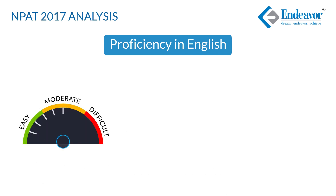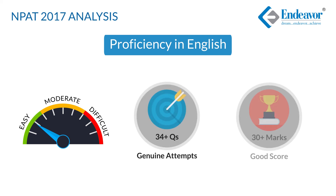Looking at the level of difficulty, it was very much possible to attempt almost 40 out of 40 questions in 30 minutes. However, considering genuine attempts and students who want to maintain high accuracy, good attempts can be considered to be somewhere around 34 to 35 and a good score to be somewhere around 30.